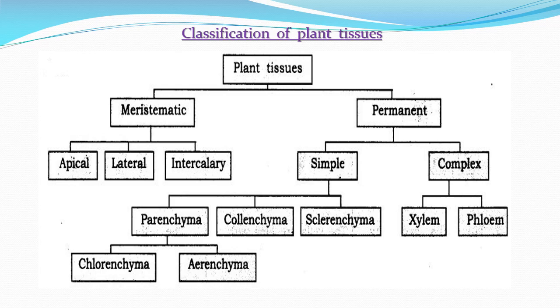Now we will look at the classification of plant tissues. Plant tissues are majorly classified into two types: meristematic tissue and permanent tissue.